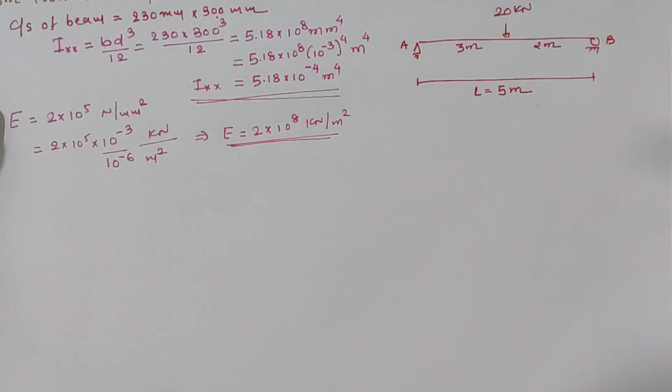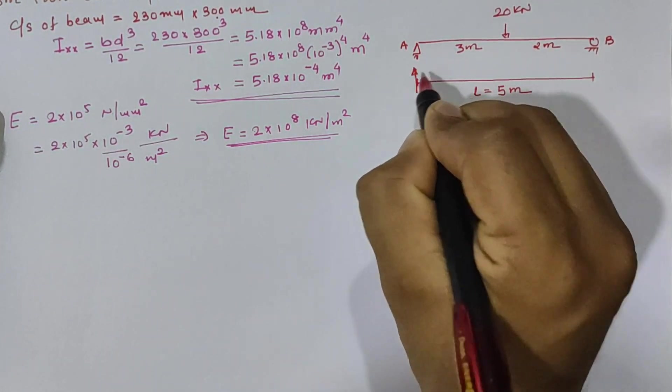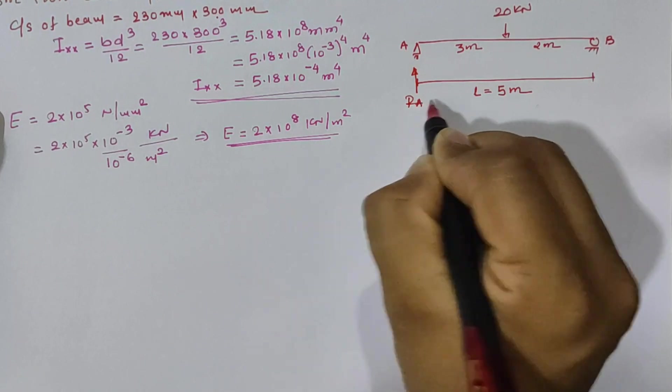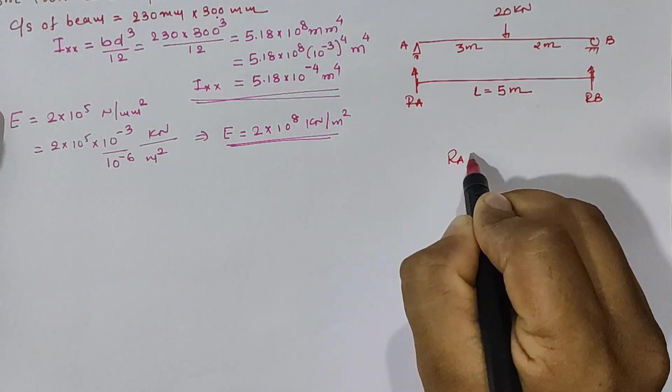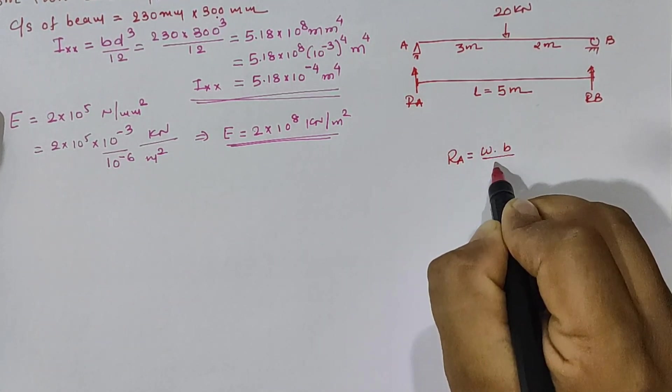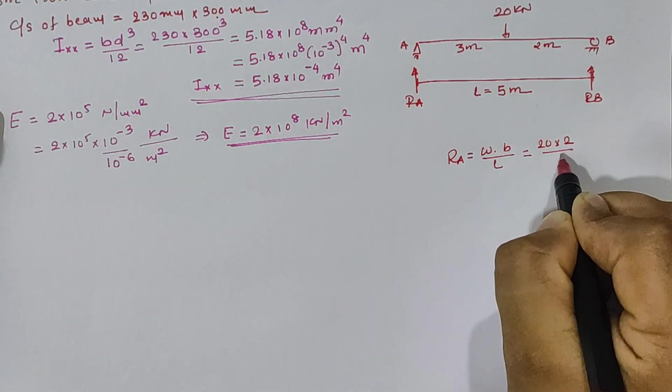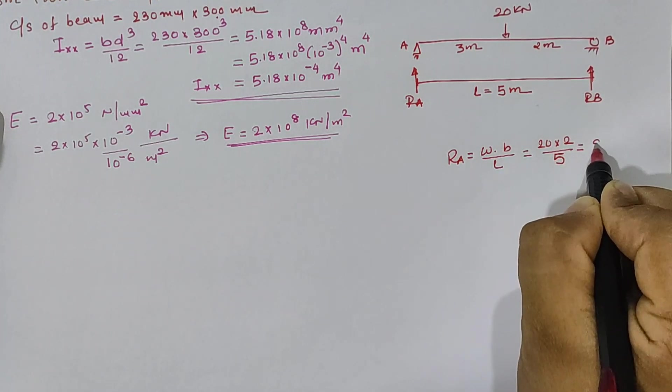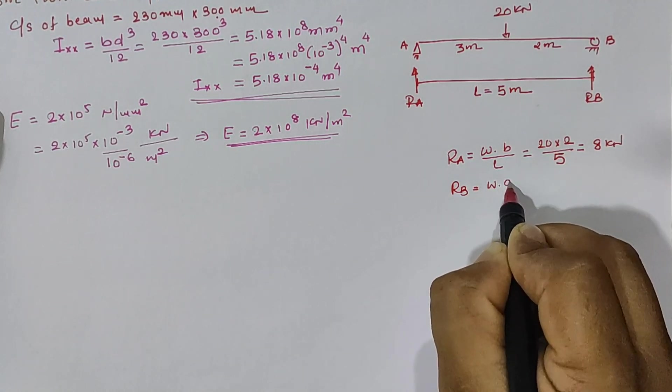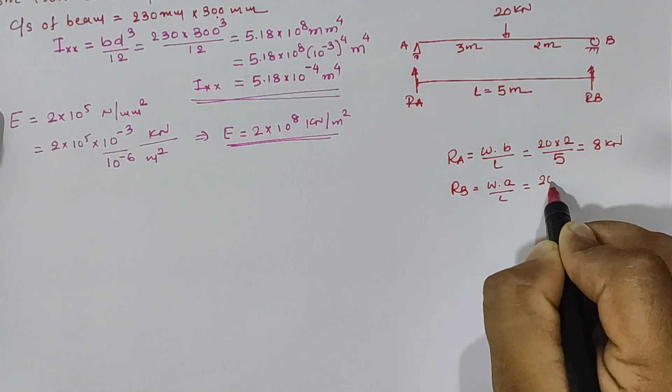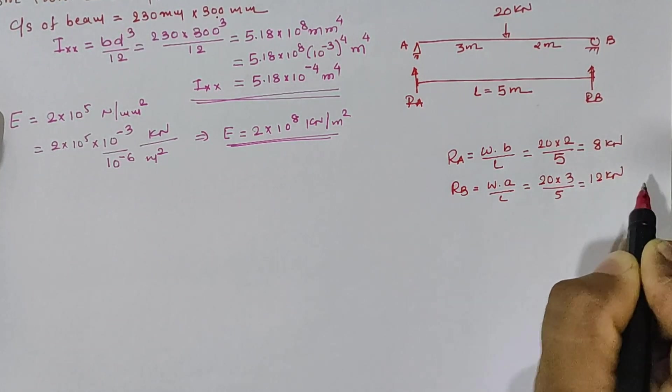Now, going ahead for the calculation of reaction of this beam for hinge support. If we assume vertical support reaction as Ra and Rb, then Ra can be directly calculated as WB by L which is equal to 20 x 2 / 5 as 8 kN and Rb can be calculated by WA by L which is equal to 12 kN.